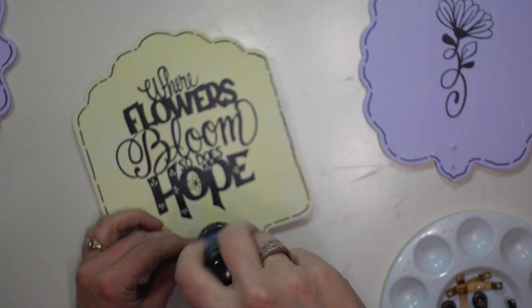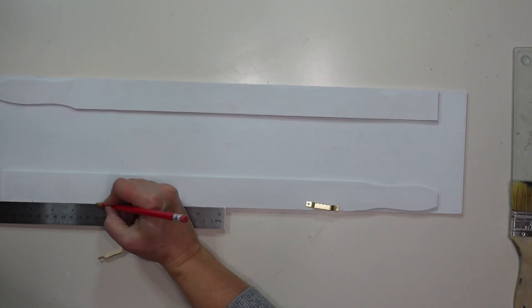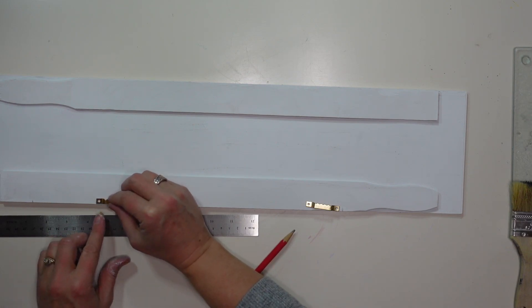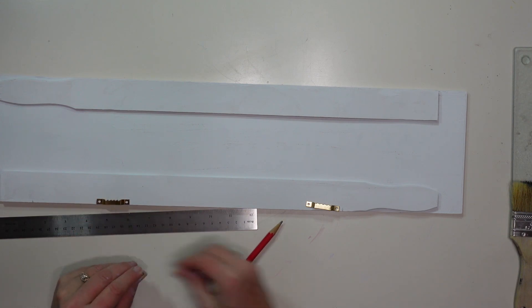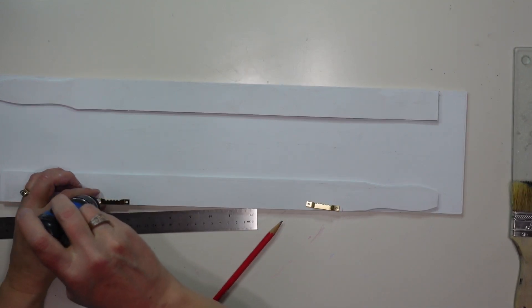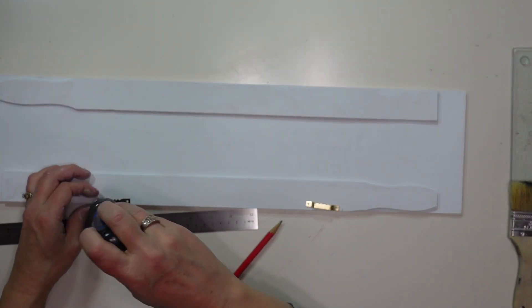Then I'm going to add my hooks back onto my signs and before I attach the signs I am going to add the hangers on the back of my sign to use these to hang my wall hooks. So I'm just reusing the ones that were on the back of those hooks to begin with.